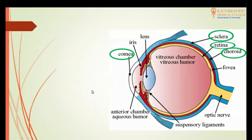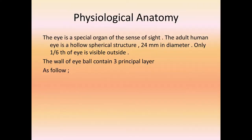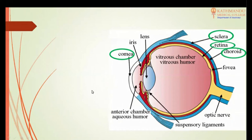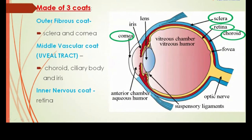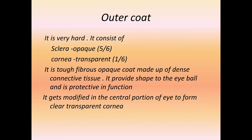The eye is situated in the orbital cavity and only one sixth of the eyeball is visible. It consists of three layers: the outer layer, the middle layer, and the inner layer. The outer layer is the fibrous layer which provides protection to the eye. The middle layer is the vascular layer providing nutrition to the eye. The inner layer, or retina, is the main layer of the eye for which all the protection and nutrition has been provided.